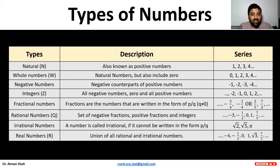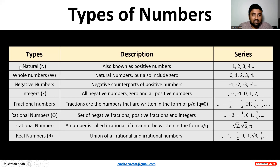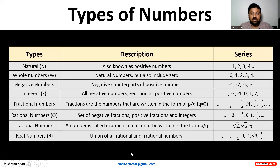Then we have real numbers. Real numbers include all rational and irrational numbers. So all the above-mentioned numbers — natural numbers, whole numbers, negative numbers, integers, fractional numbers, rational numbers, and irrational numbers — are all included in real numbers.